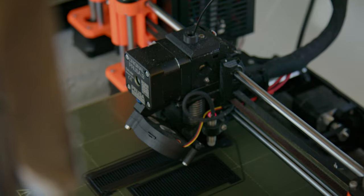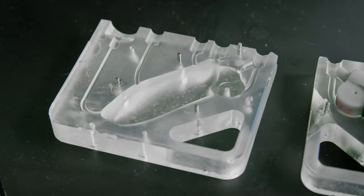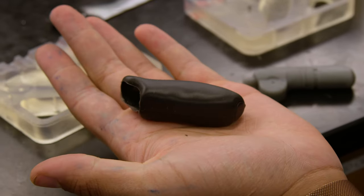With FDM printed molds, molded items would end up with these odd striated striped textures on top. Once we switched over to using clear resin, we were able to obtain a much smoother surface finish because of the much higher resolution.